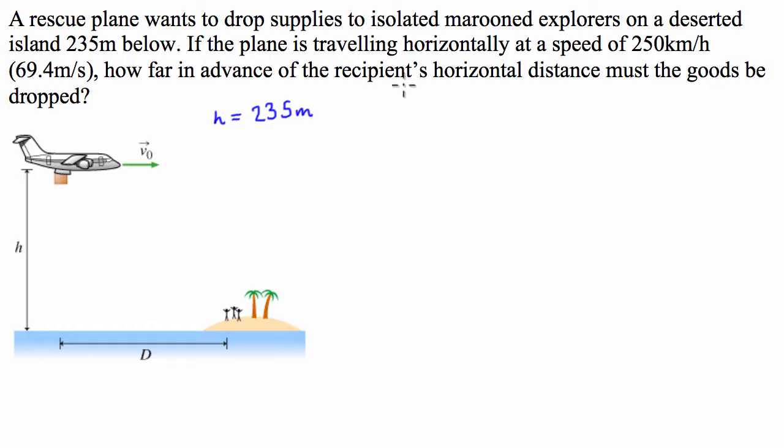If the plane is traveling horizontally at a speed of 250 kilometers an hour, which is 69.4 meters per second, we know that V0 is equal to 69.4.